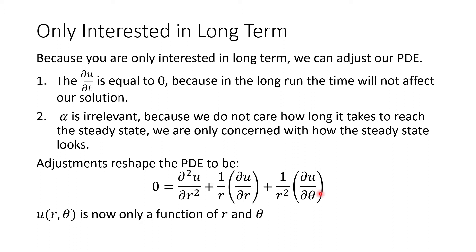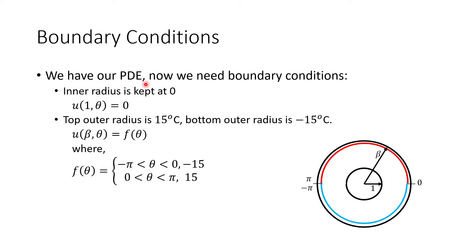Now, boundary conditions. We have the PDE set up - let's look at what kind of boundary conditions we're dealing with. Our heat is only dependent on the radius and the angle. The dowel is one centimeter and keeps the center at zero degrees Celsius, so anything at radius one centimeter at any angle is going to be zero temperature. The outer radius is hotter on top and colder on the bottom - so we have u of beta comma theta equals f of theta, which is only dependent on theta, where the top half is 15 degrees and the bottom half is negative 15.